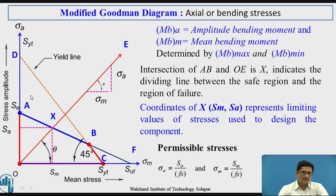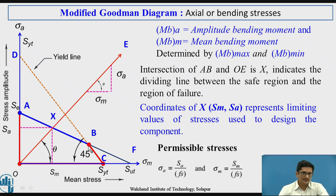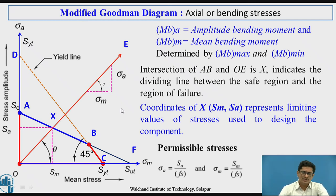To recall the process: we initially plotted SYT on the x-axis and SYT on the y-axis, then joined SE to SUT. At the intersection of this line with the yield line, we get point B. The region O, A, B, C is the region of safety. The angle theta for axial or bending stress is obtained from sigma_A by sigma_M, or MBA by MBM, or PA by PM. The permissible stresses are sigma_A equals SA upon FS and sigma_M equals SM upon FS.